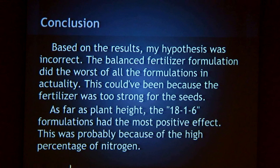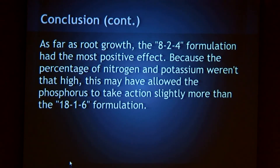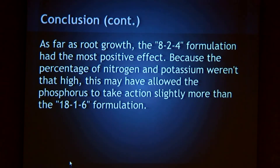As far as plant height, the 18-1-6 formulation had the most positive effect. This is probably because of the high percentage of nitrogen — as I said before, nitrogen promotes green leafy growth. As far as root growth, the 8-2-4 formulation had the most positive effect. I think this may have been because the nitrogen and potassium were only 8% and 4%, which may have given more room for the phosphorus to take action, allowing for more root growth, and it slightly beat the 18-1-6 formulation.